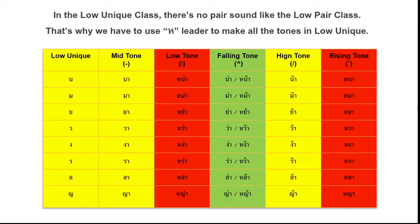You will see the red ones — ho heep and Low class consonants. Because Low class has no pair sound, we need ho heep to make all the tones. You should remember: you need me, so you have to follow me. We will pronounce the Low class consonant, but use the tone rule from ho heep, which is in high class. So we use the high class tone rules. Ho heep is silent, but we just follow its rules.